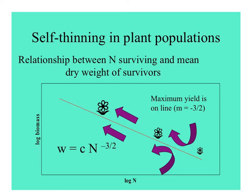You may have seen this curve before. It's a log-log plot with the number of plants on the x-axis and biomass or plant size on the y-axis. Basically, you can have lots of plants at a small size, but as some grow bigger, fewer live. This line usually ends up with a slope of negative one and a half. This is called the self-thinning curve.